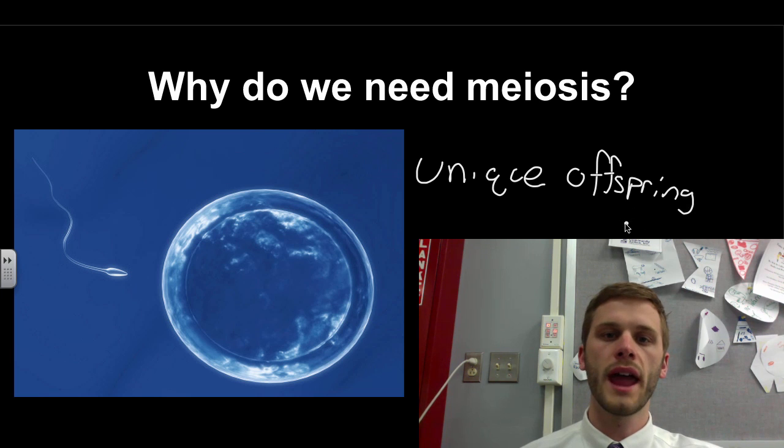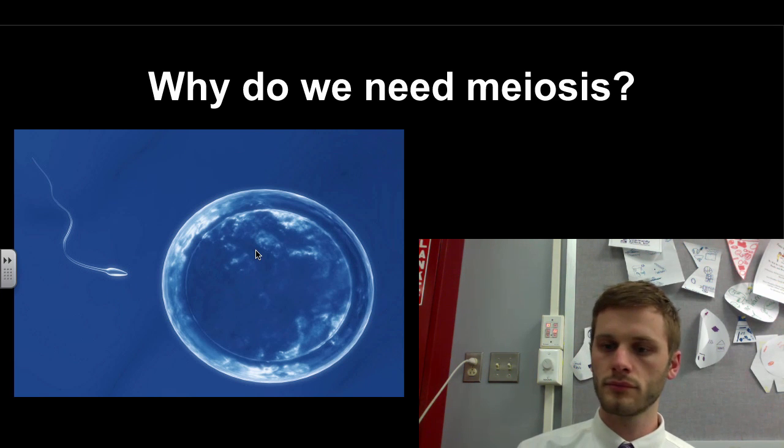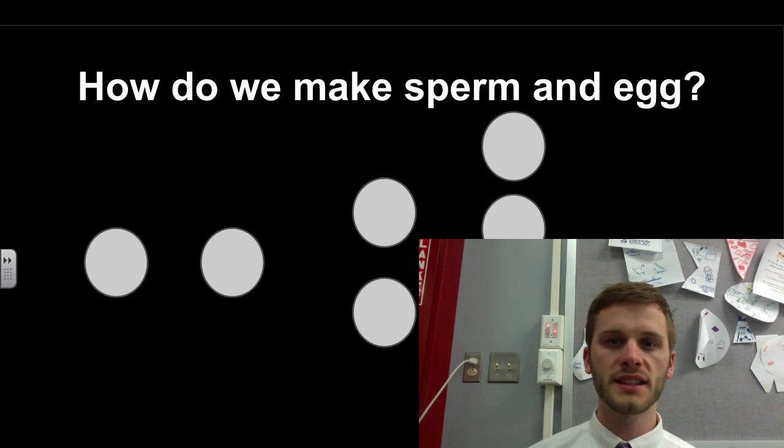So everything created through sexual reproduction or meiosis is and looks different. We all have different and unique DNA. That's why sex or sexual reproduction and meiosis is so important, and it creates sperm and egg.